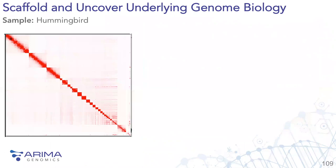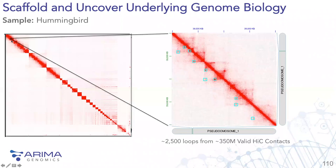Zooming into a small region from the first pseudo chromosome, you can detect loops — about 10 detected in a two-megabase locus — which looks very similar to what you'd see on the human genome. In fact, you can detect about 2,500 loops in this particular sample from just a couple lanes of sequencing.